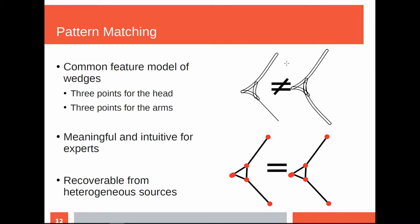We use a common feature model. Every wedge can be described with those points: we have three points for the wedge hat which defines the triangle and three points for the wedge arms. At every vertex of the triangle we can attach a wedge arm and describe its end point with a key point. This mathematical description of wedges is also meaningful and intuitive for assyriologists. We can recover these representations not only from the digital drawings but also, for example, from 3D tablets. So we have a common interchange format in which we can describe wedges and thus search the corpus of heterogeneous data.